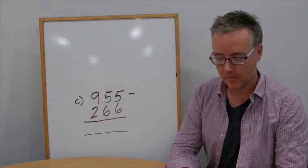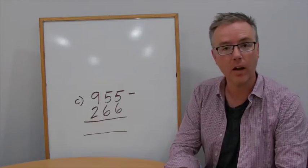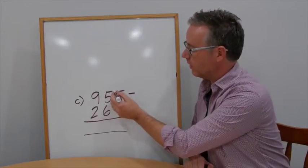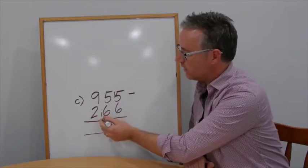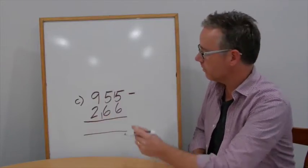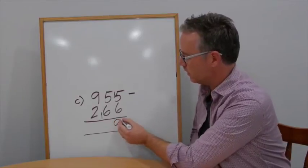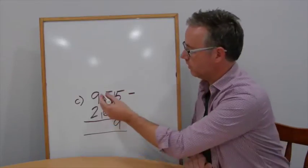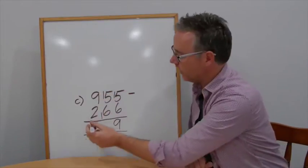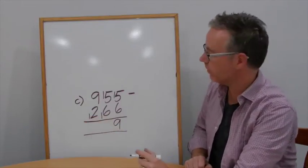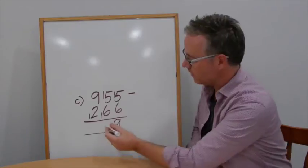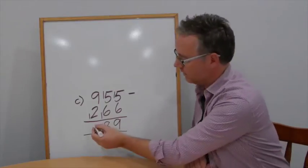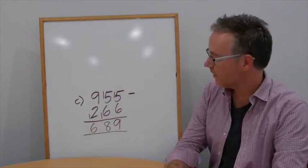Check your estimate. Question C: 955 take away 266. 5 take away 6, can't do. Add 10 — that's 15. Take off that 10 that I just added. 15 take away 6 is 9. 5 take away 7, can't do. Add 10, now it's 15, and we add 10 which will then take off. 15 take away 7 is 8. 9 take away 3 is 6. Answer: 689.